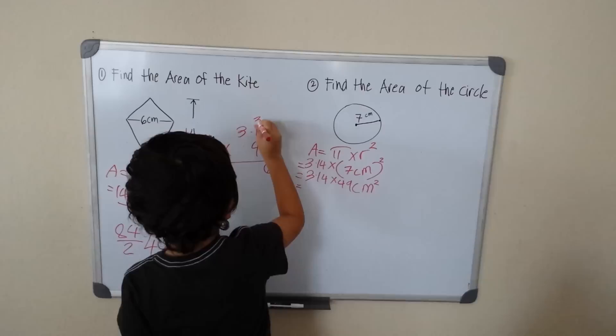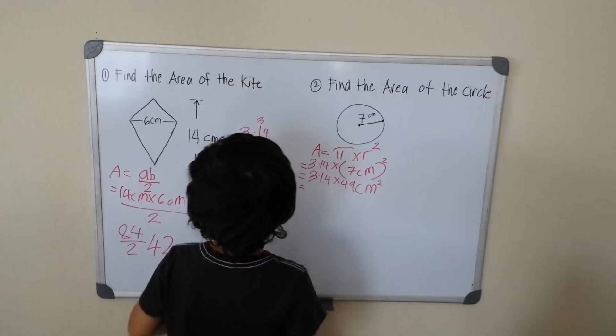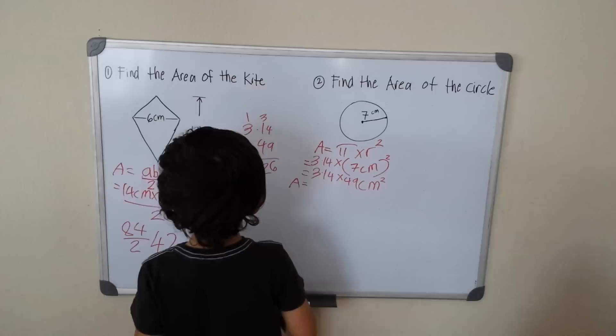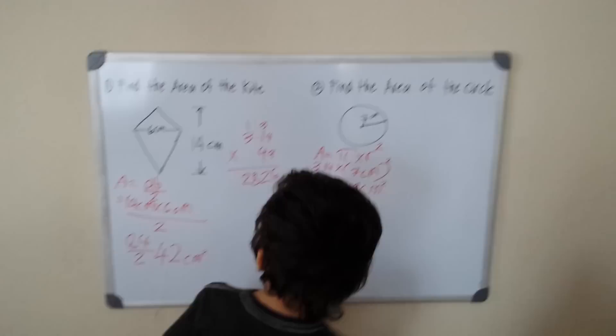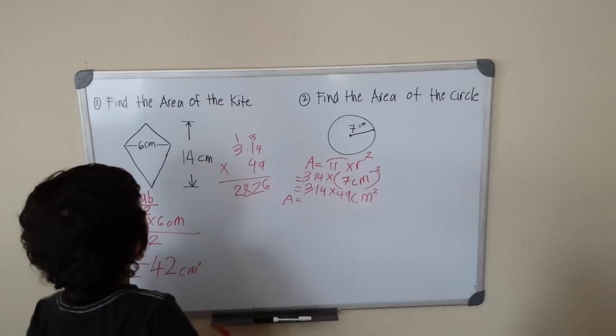But 9 times 1 is 9, plus 3 is 12, carry the 1. 9 times 3 is 27, plus 1 is 28. Okay. Okay. So I'm done with the 9.